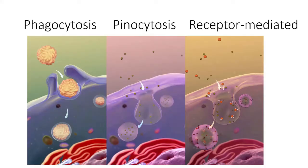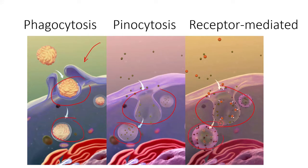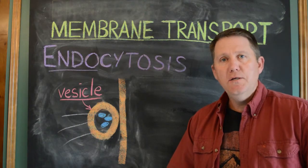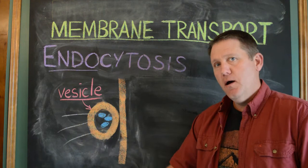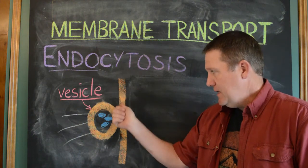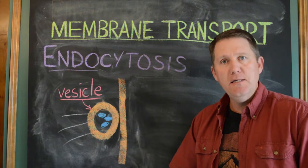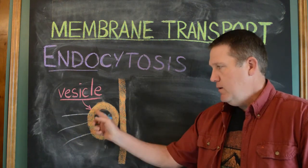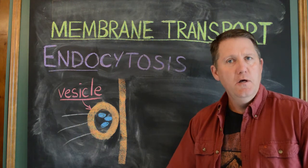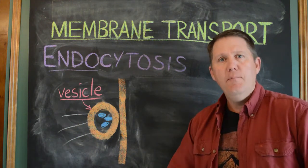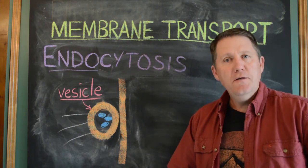We can see all three versions side by side. In each case the membrane changes shape — a little differently in phagocytosis than the other two — and in all three cases you end up with those objects inside a vesicle. Endocytosis is a safe way to bring large objects into a cell: it keeps the integrity of the cell membrane intact and compartmentalizes whatever is brought in so the cell can still control what happens to it.